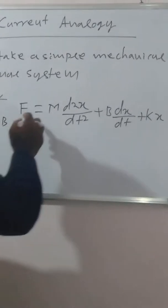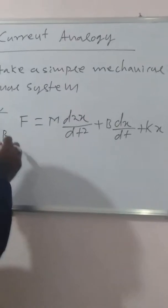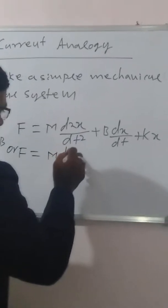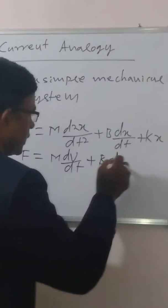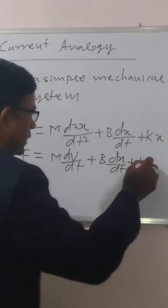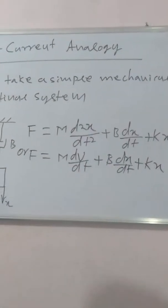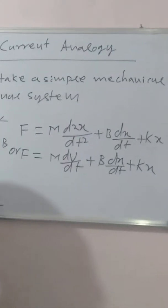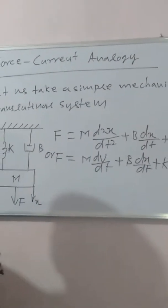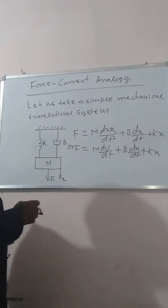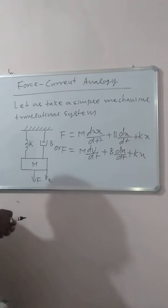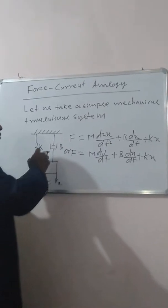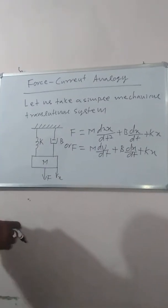We can also write this equation in another form: F = M d(dX/dt)/dt + B dX/dt + KX. The derivation of this equation and explanation of each element — spring system, damping system, and mass system — I have already discussed in detail in my last lecture. You can follow that lecture to understand the derivation of this equation.